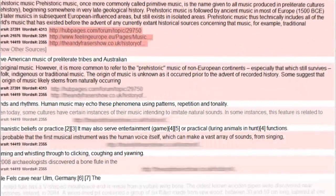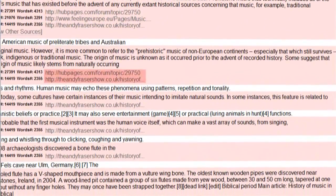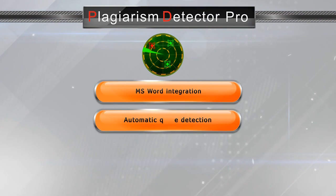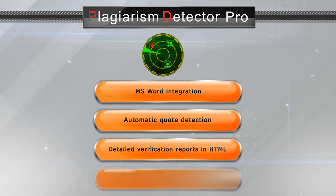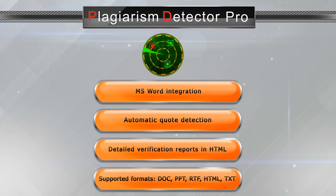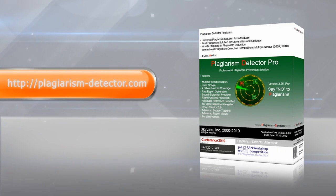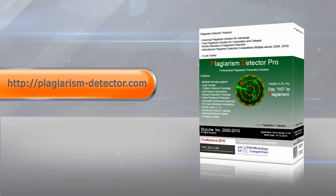At a glance, you can see the source text for each case of plagiarism, thanks to convenient reports. Plagiarism Detector has everything to make your work both easy and effective. Rest assured that the texts you grade are the real deal. Download a trial version of Plagiarism Detector at plagiarism-detector.com.